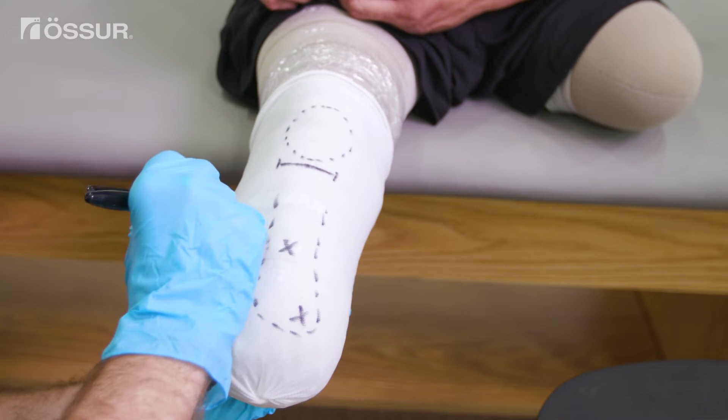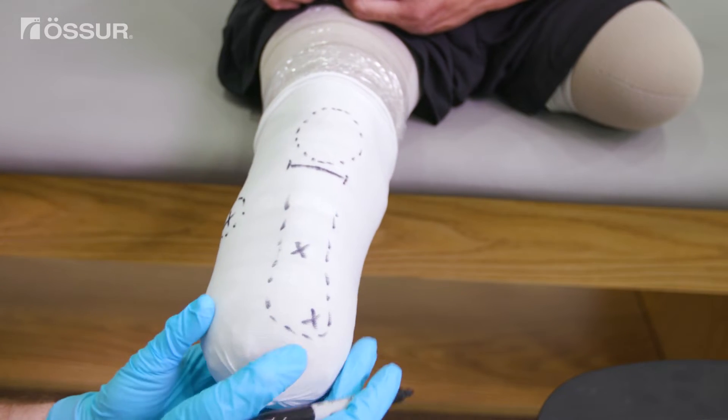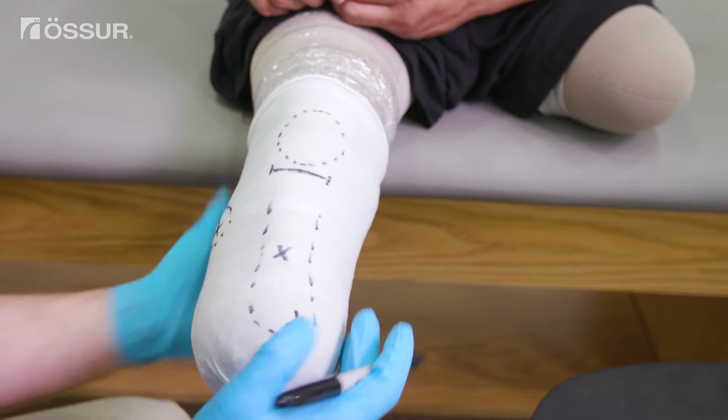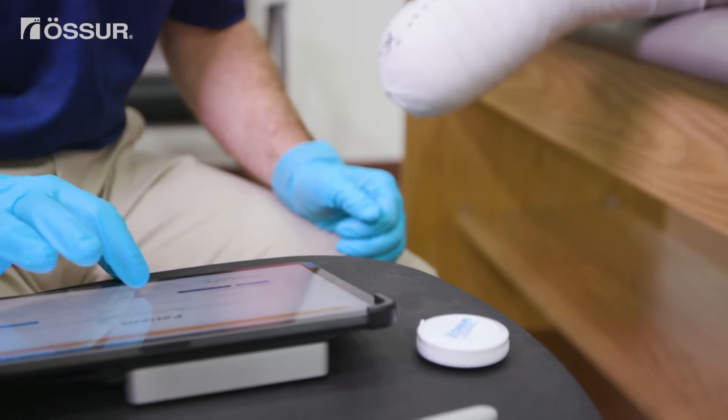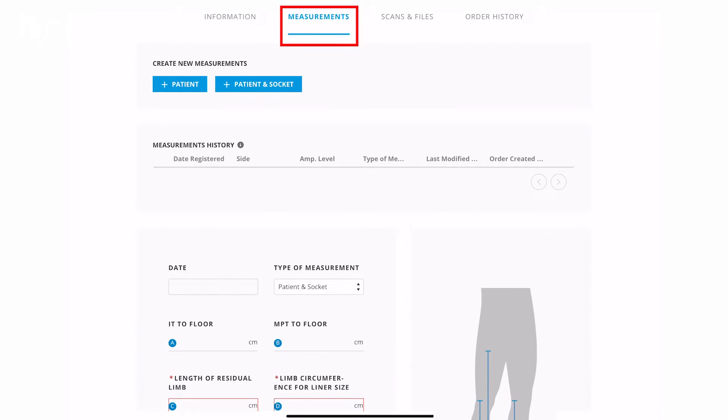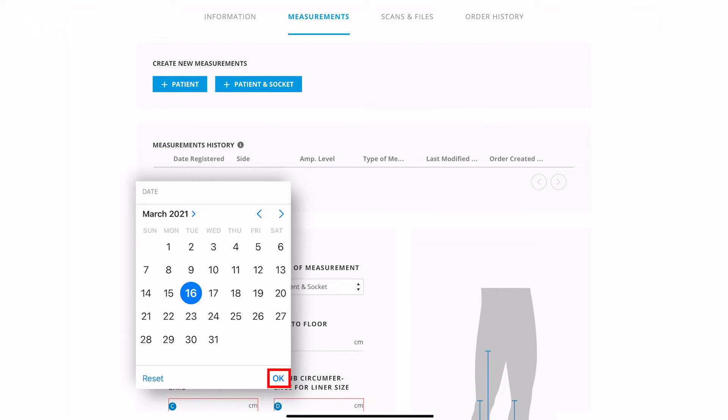The scanning process captures these landmarks for the designer to use during the modification process. To begin, press the measurements tab inside the portal. Then press patient and socket. Next, select the date of measurement and press OK.